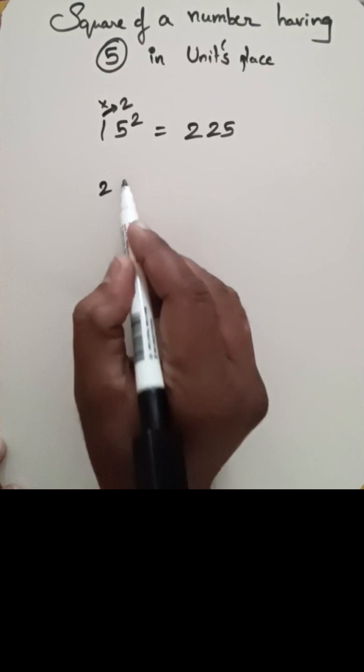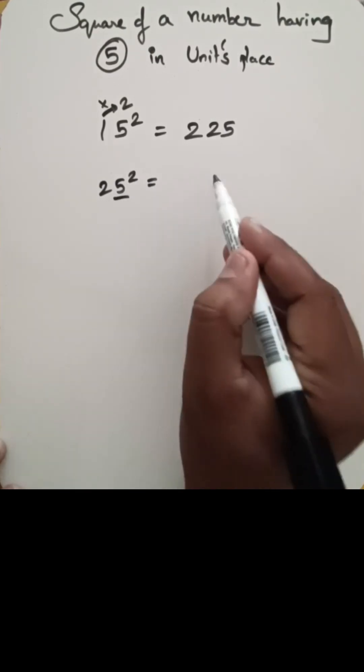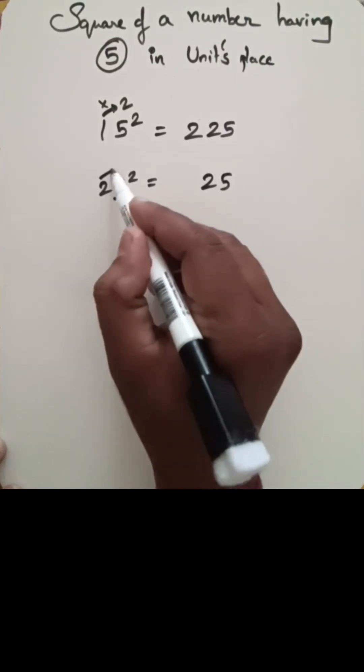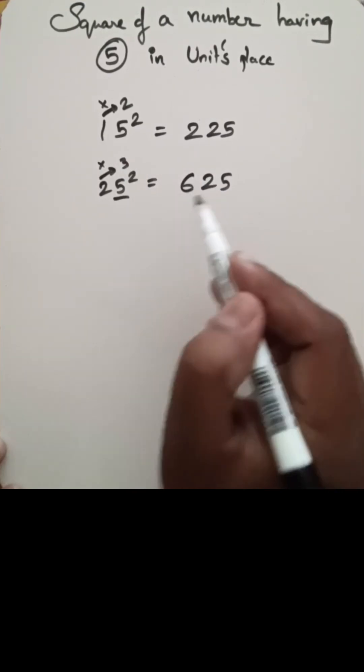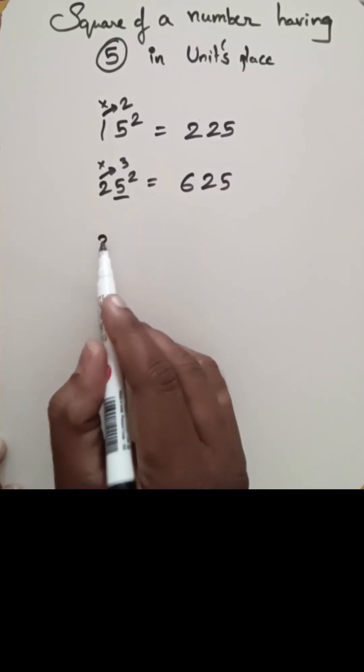Next, 25 square. 5 square is nothing but 25, and 2 — after we have 3, so 2 into 3 is nothing but 6. So 25 square is 625.